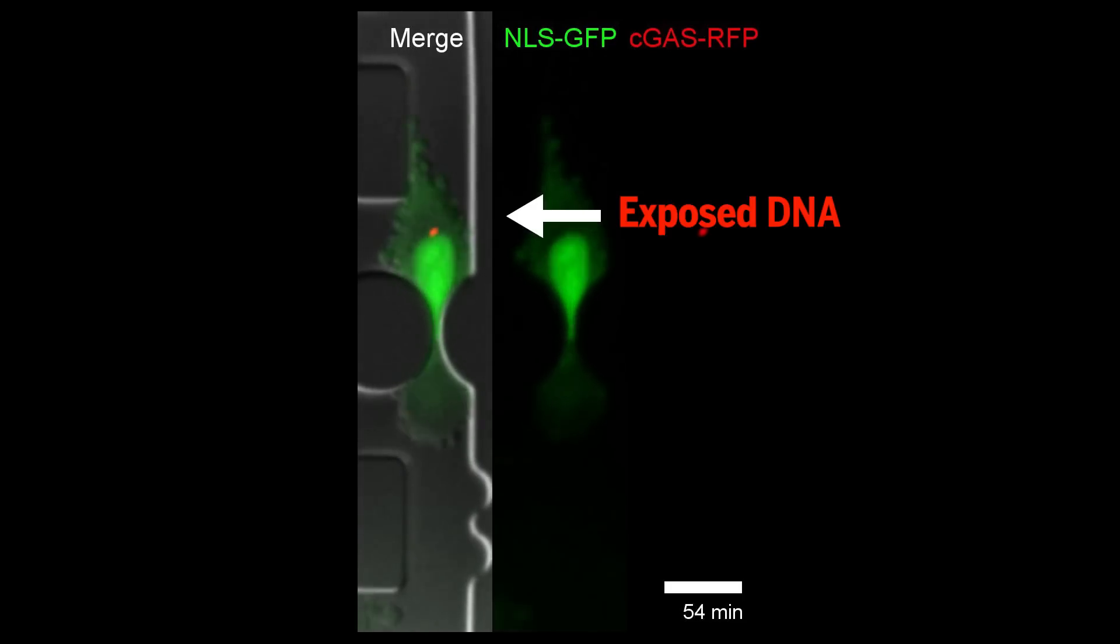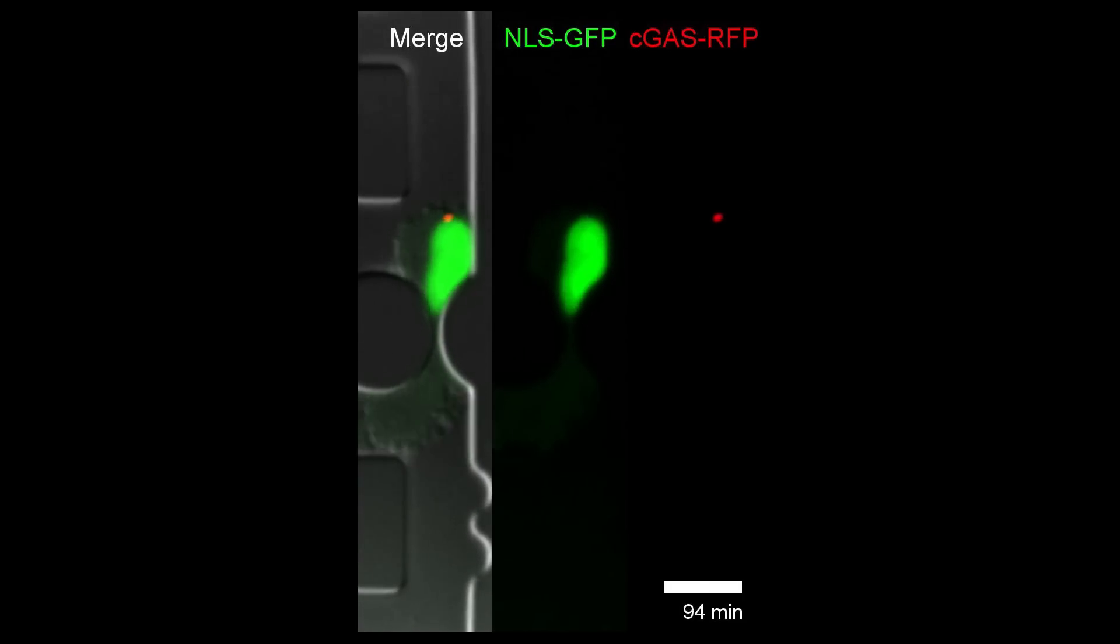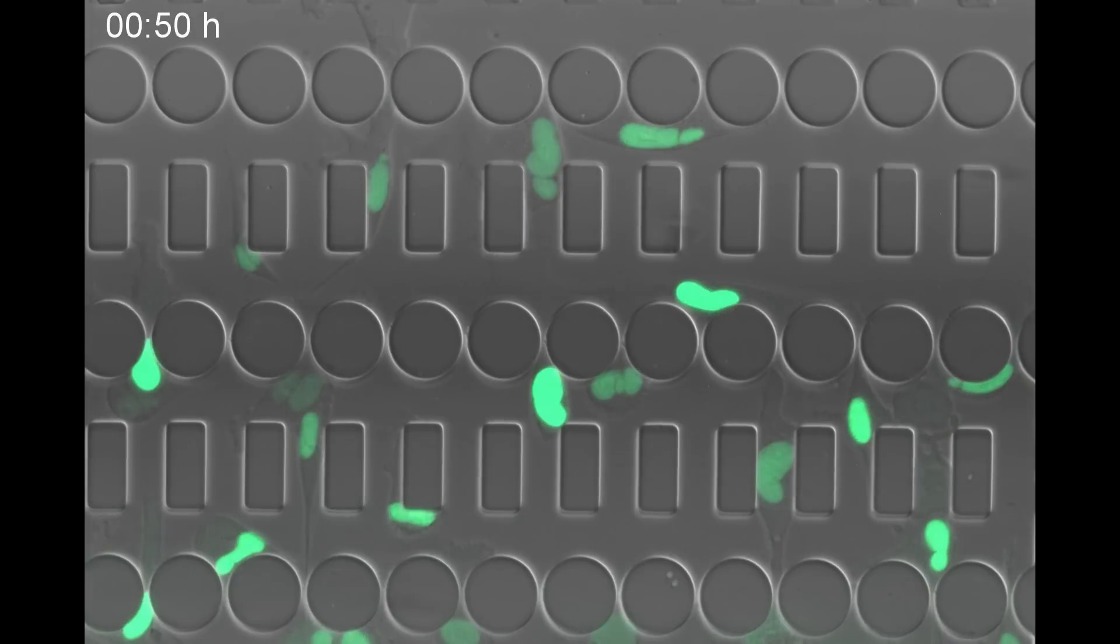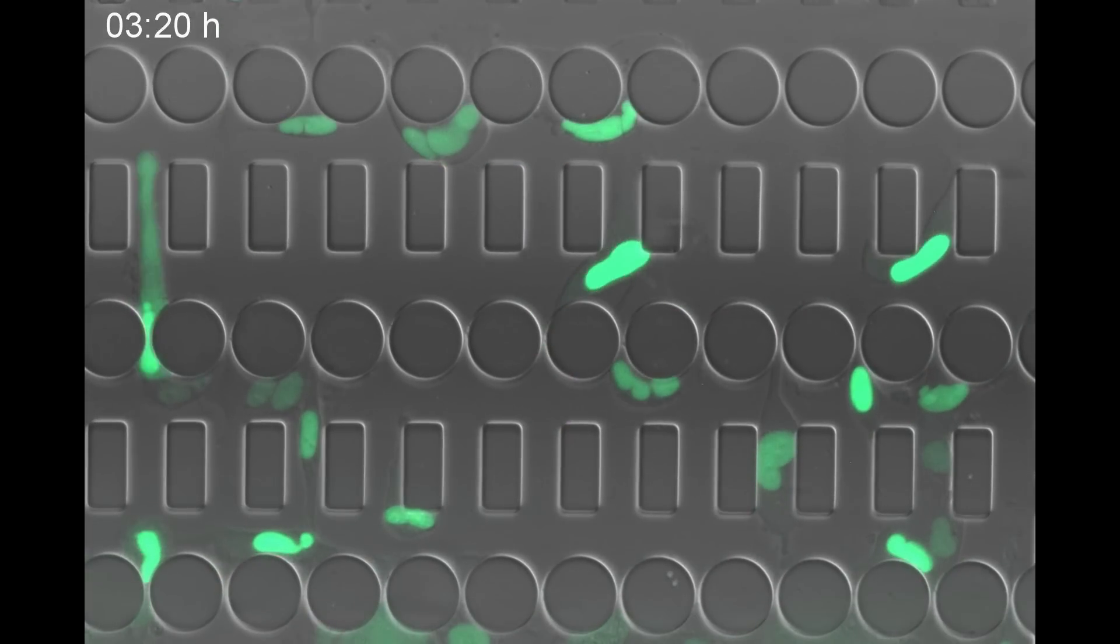A leaky nucleus could be disastrous for a cell. But the studies also show that cells quickly repair the ruptures, allowing them to return the green molecule to the nucleus and prepare for the next tight squeeze.